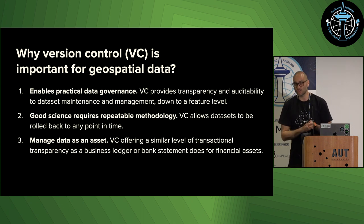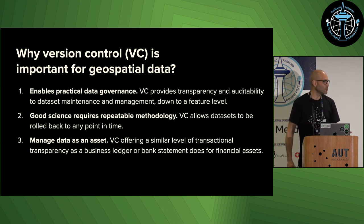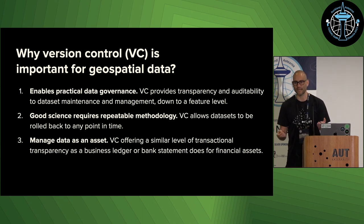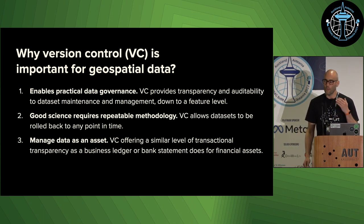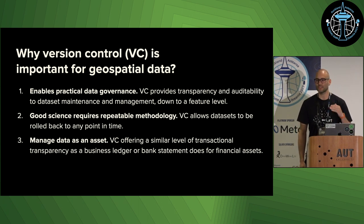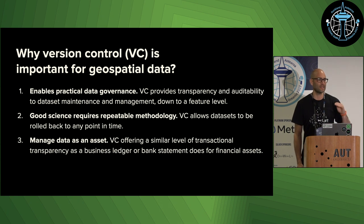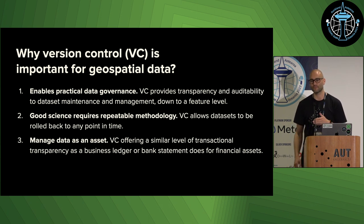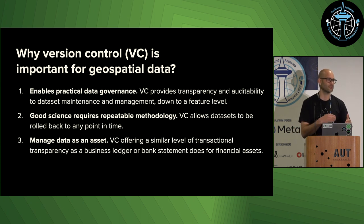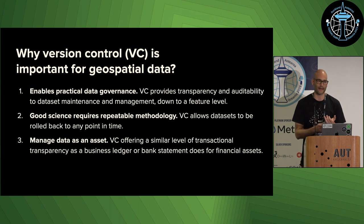Good science requires repeatable methodology. Geospatial has been selling itself for 15 years and we've finally got a seat at the decision-making table — most large organizations now use geospatial data when making decisions. When you get to that stage, you need to raise the level of maturity around how you treat the data, because there will be a point where people say: we made a decision four years ago based on this dataset — why did we do that? Well, that dataset might be gone now. But if you have proper version control, you should be able to roll back to any stage in its lifecycle.